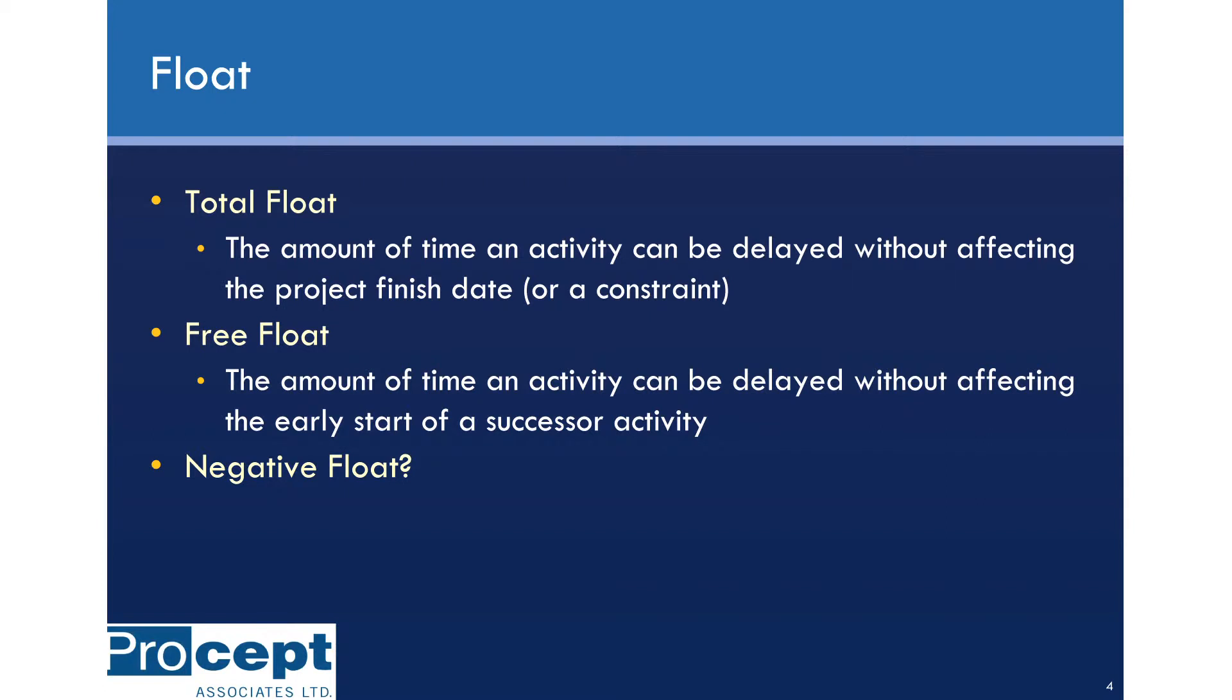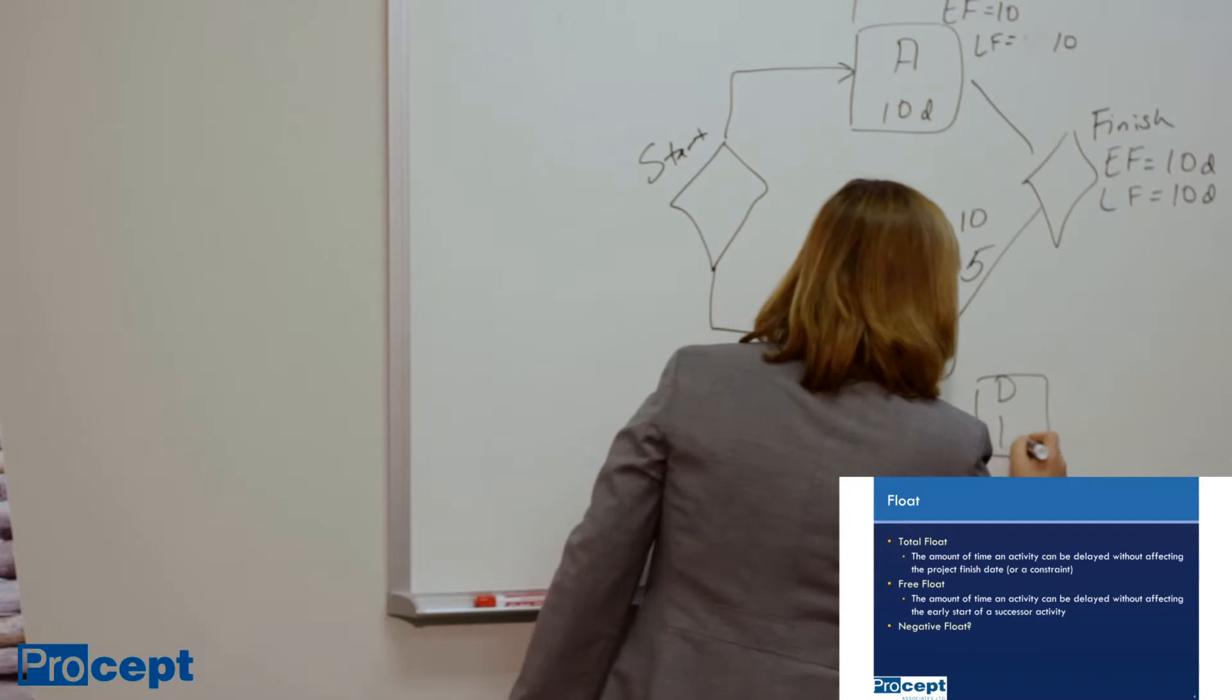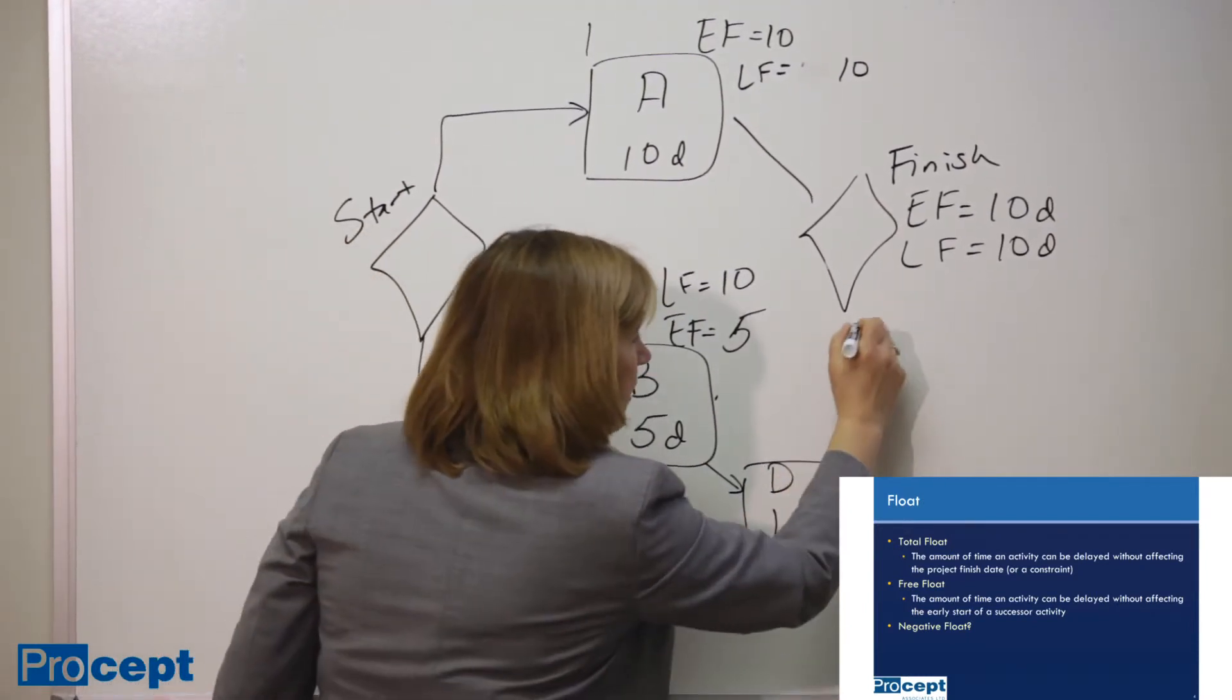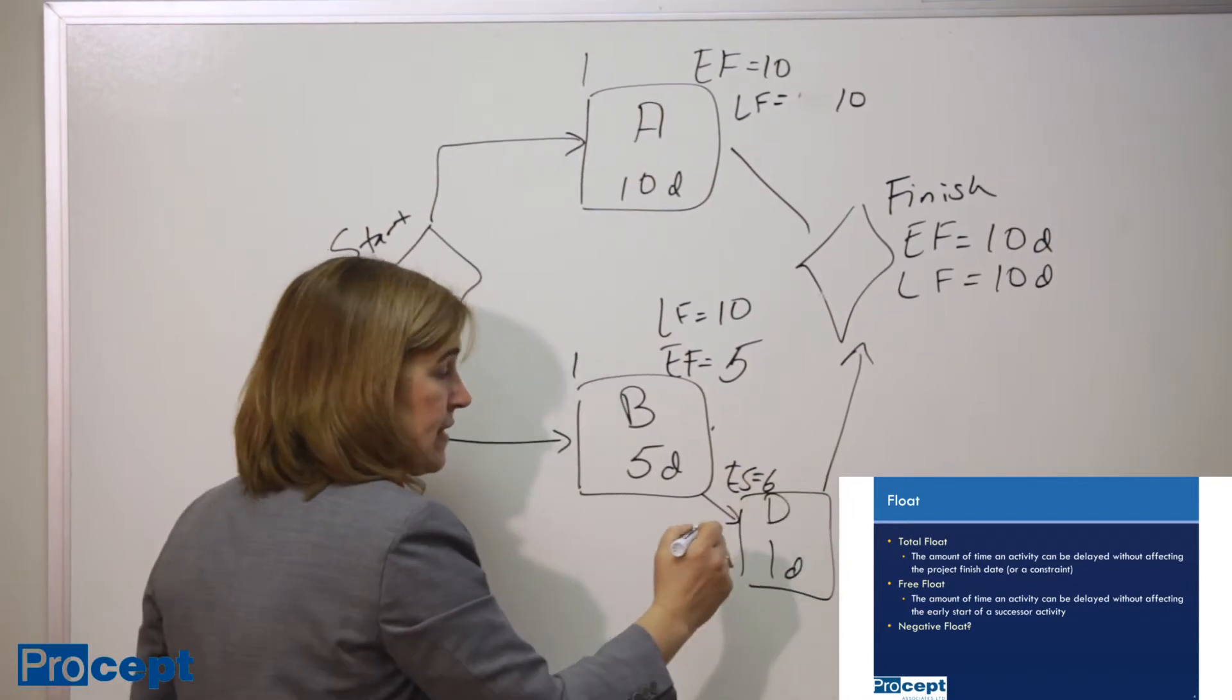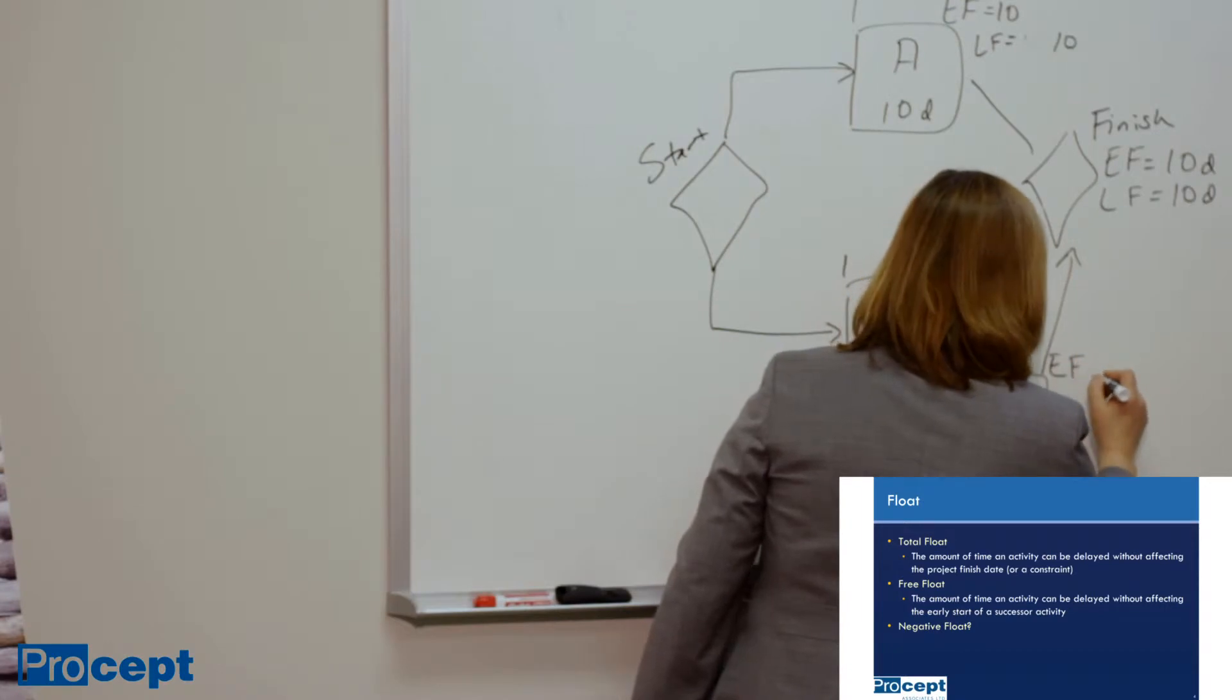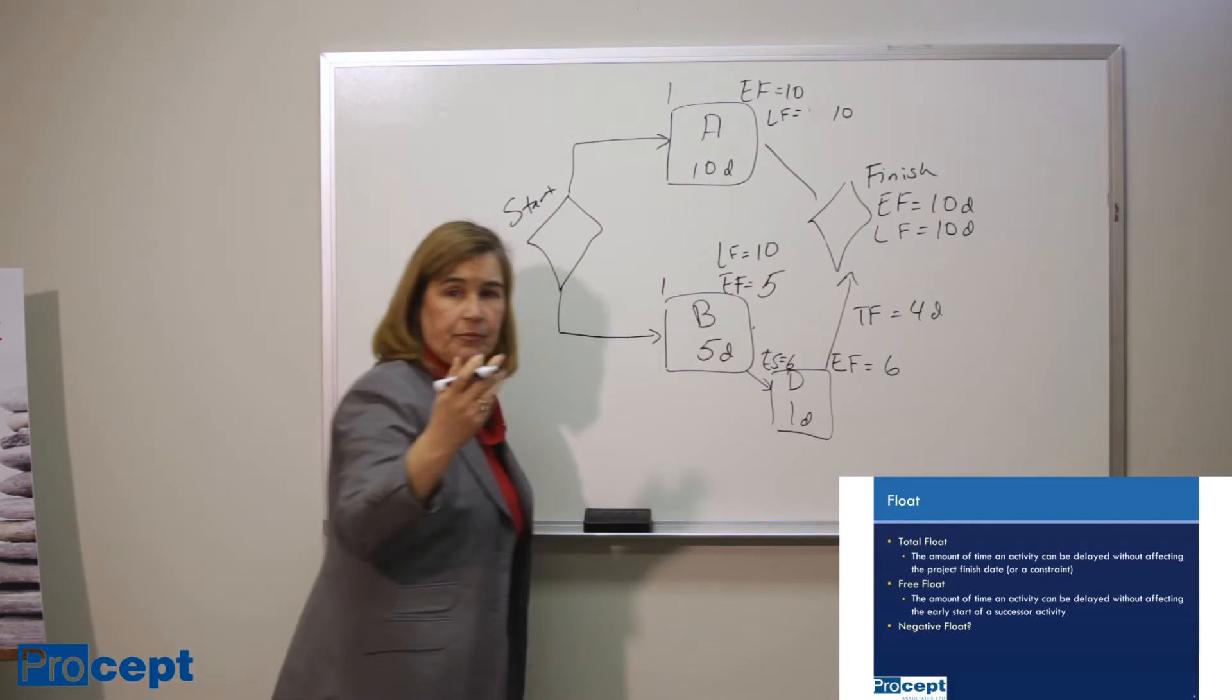Hence the definition of total float. Now, if we decide to add another activity, let's say activity D over here. And D is 1 day long. And we decide that we are going to start D after B is finished and then we can finish the project. We now have the earliest start time for D as being day 6. And of course the earliest finish time, it's a full day's worth of work, the earliest finish time for D is also going to be day 6. So now our total float on this path is equal to 4 days instead of the previous 5.